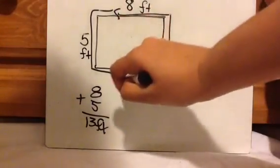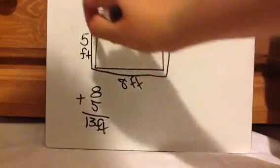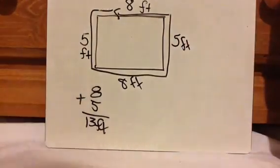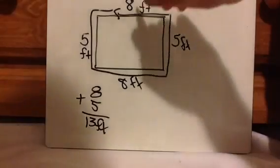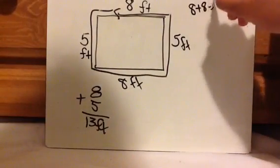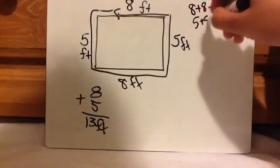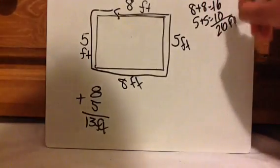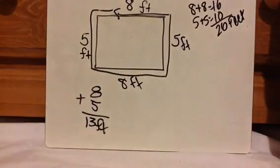So when they label just these two dimensions you have to also finish labeling. So if this is 8 this is also 8. If this is 5 this is also 5. And so then you're like 8 plus 8 plus 5 plus 5. So 8 plus 8 equals 16. 5 plus 5 equals 10. 16 plus 10 equals 26 feet.